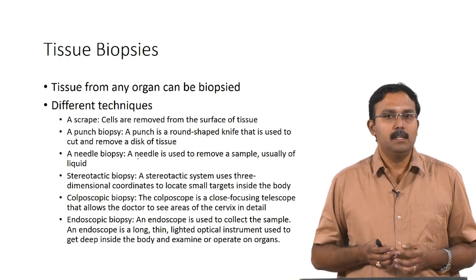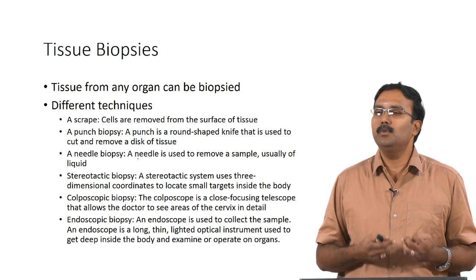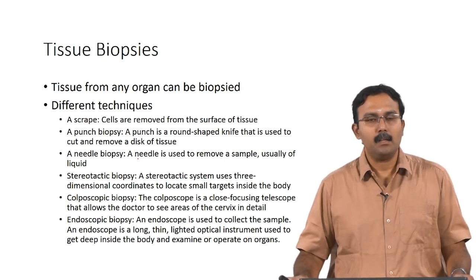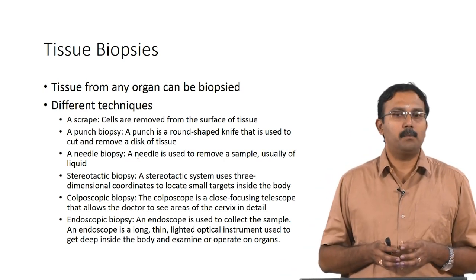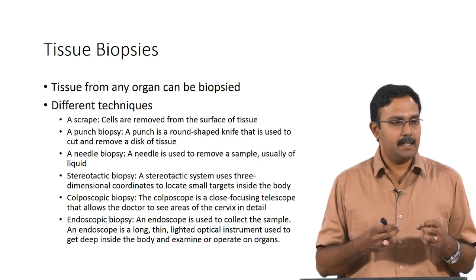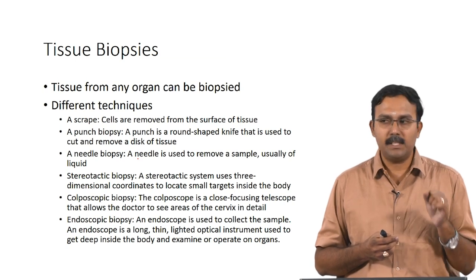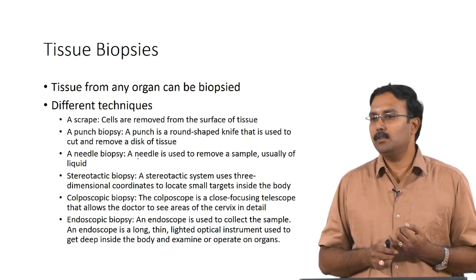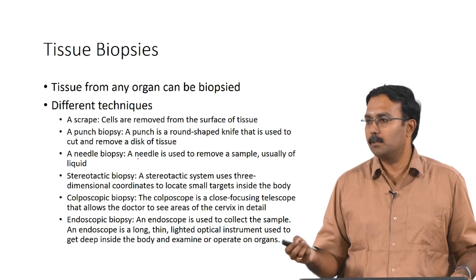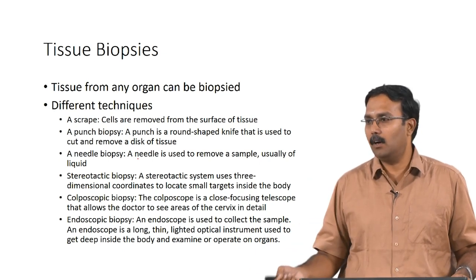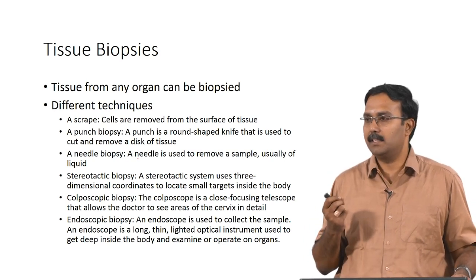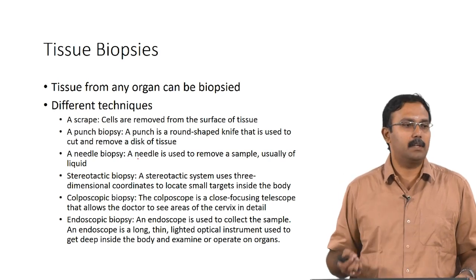Needle biopsy uses a needle to remove a sample — usually for liquid samples like blood. Stereotactic biopsy uses a stereotactic system with 3D coordinates to identify a small target region and specifically remove tissues. This is used where you need a lot more control, for example when taking brain tissue, where you would not want to damage the organ and need precise control over which part of the tissue you are harvesting.